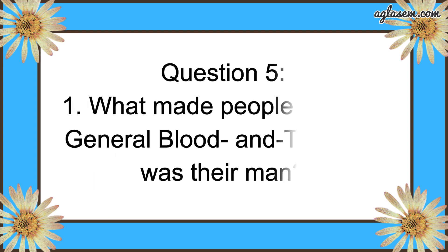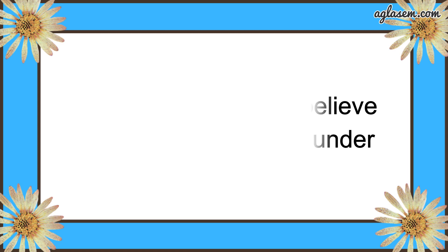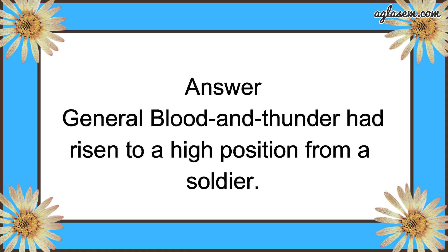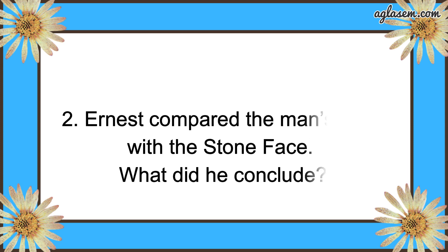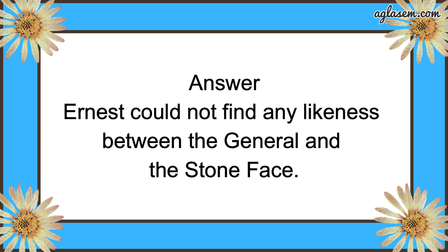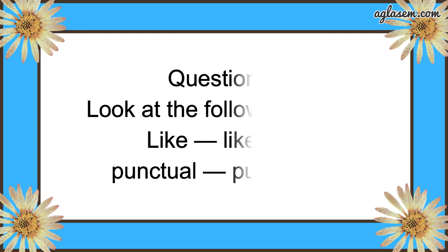Question 5 asks: what made people believe General Blood and Thunder was their man? General Blood and Thunder had risen to a high position from a common soldier. When he returned to the valley, his childhood friends said that the general had always looked like the stone face. Second part: Ernest compared the man's face with the stone face — he could not find any likeness between the general and the stone face.